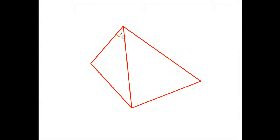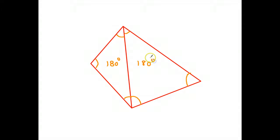I know that that angle plus that angle plus that angle adds to 180. I also know that that angle plus that angle plus that angle adds to 180, which means that all of those angles together must add to 360.